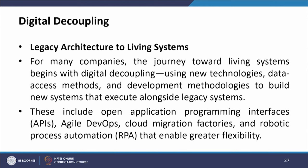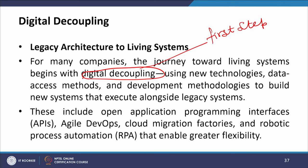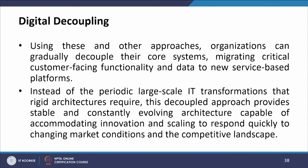Digital decoupling is the first component of transitioning from legacy architecture to living systems. Using new technologies, data access methods, and development methodologies — including open APIs, agile DevOps, cloud migration factories, and robotic process automation — organizations build new systems that execute alongside legacy systems. This enables organizations to gradually decouple core systems, migrating critical customer-facing functionality and data to new service-based platforms, providing a stable and constantly evolving architecture capable of accommodating innovation and scaling quickly to respond to changing market conditions.